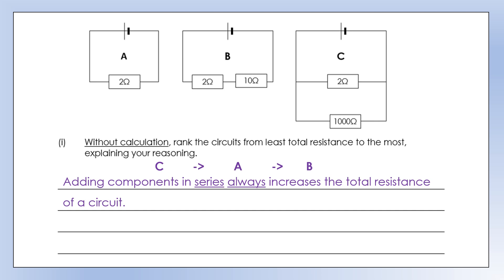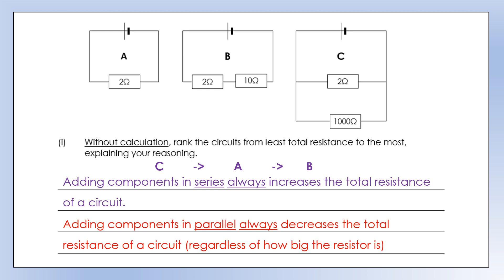The first rule: adding components in series always increases total resistance. Comparing circuit A and circuit B, we've added a 10 ohm resistor in series in circuit B, so B must have bigger resistance than A. The second rule: adding components in parallel always decreases total resistance, because it gives more pathways for charge to move. So circuit C must have lower resistance than circuit A, since we added a 1,000 ohm resistor in parallel with the 2 ohm. That's how we get the order C, A, B — regardless of the parallel resistor's size.